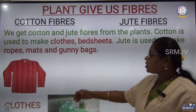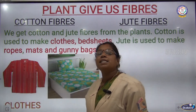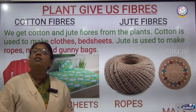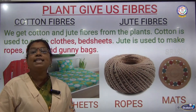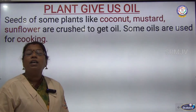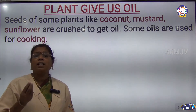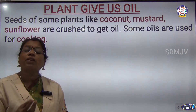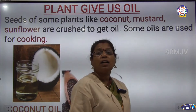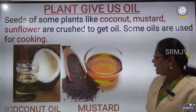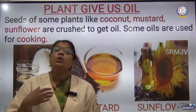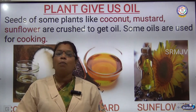Clothes and bed sheets come from cotton fibers, and ropes and mats come from jute fibers. Plants also give us oil — we get oil from seeds like coconut, mustard and sunflower seeds, and these oils are used for cooking at home.